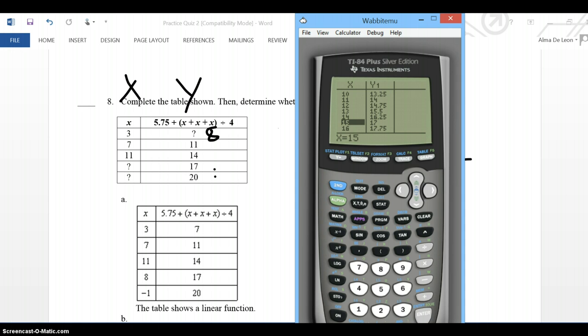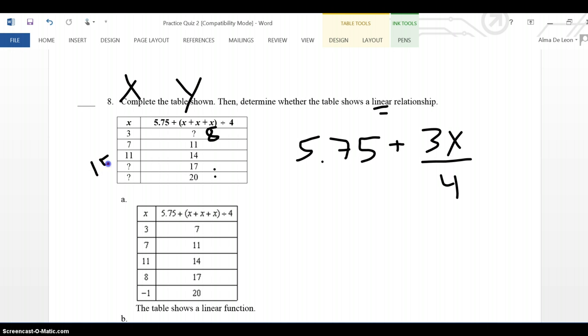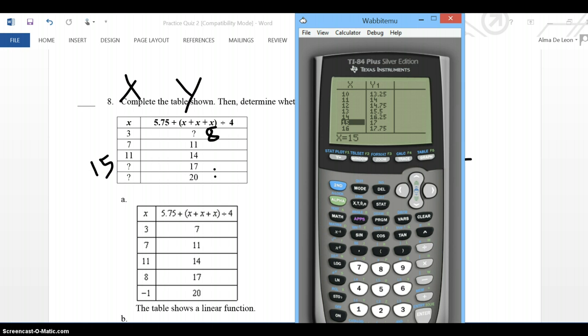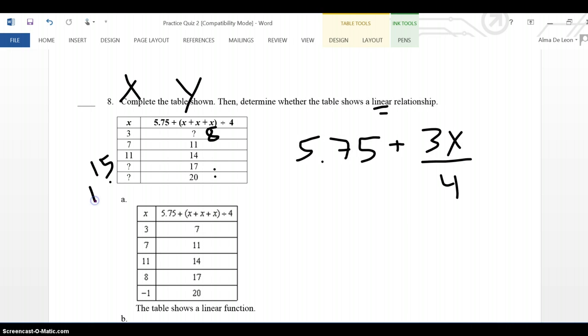when x is 15, y is 17. When x is 19, the y is 20. So the missing values are 8, 15, and 19.